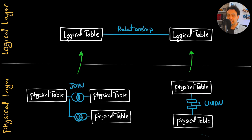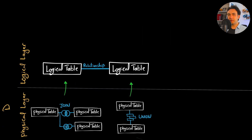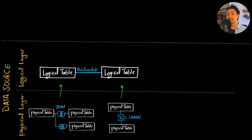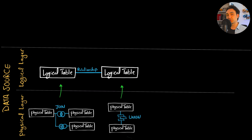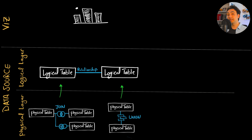It's very important to understand that in the logical layer we cannot merge tables into one table. After connecting them using a relationship between two logical tables, the tables stay as they are — nothing is merged; we just describe the relationship between them. Both the physical layer and the logical layer exist inside the Tableau data source, and on top of the data source we have our visualizations, which see only the logical layer tables.